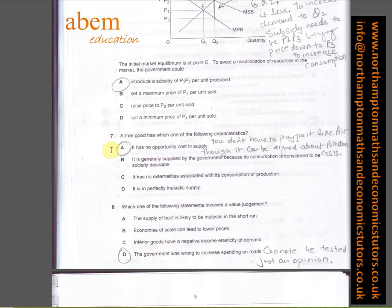In question number seven, A is the answer because it's about a free good which has no opportunity cost. A good example is free air. However, we can argue about the pollution costs.